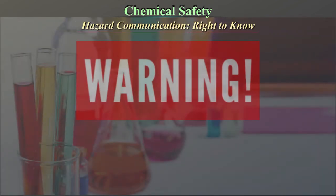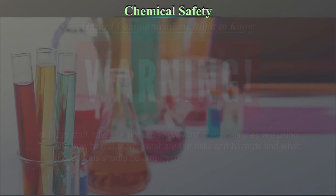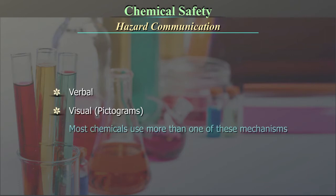This is an important chapter in the lab safety manual which has to be read and understood completely. Hazard communication — Right to Know: The lab staff have the right to know what chemicals they are using, how to use them, what the risks and hazards are, and what precautions should be employed. All these are adequately indicated through several mechanisms like verbal, visual, and pictograms. Most chemicals employ more than one of these mechanisms.